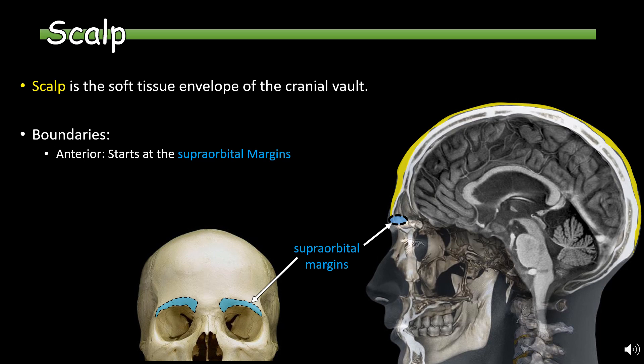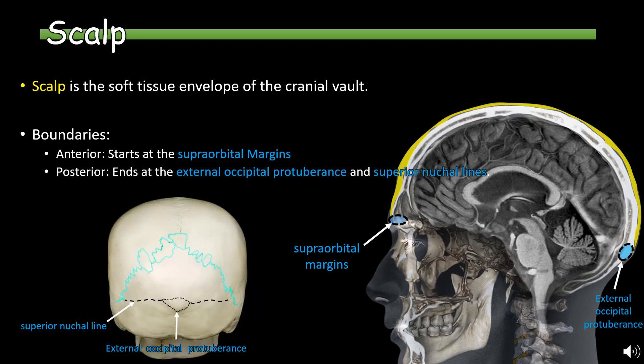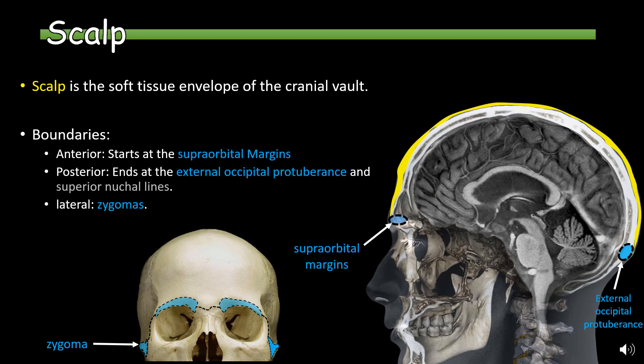The boundaries of the scalp: the anterior aspect starts at the supraorbital margins, the posterior aspect ends at the external occipital protuberance and superior nuchal line, and the lateral boundaries include the zygomatic bone.